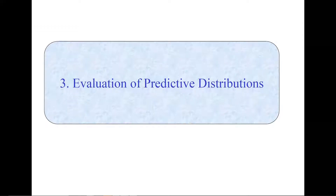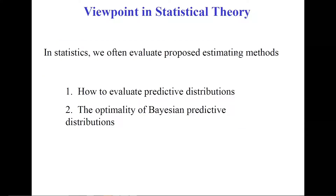Welcome to Section 3, Evaluation of Predictive Distributions. In statistics, we often evaluate proposed estimating methods. In this section, we consider how to evaluate predictive distributions. Suppose that we have two ways of constructing predictive distributions, p-hat and q-hat, and we want to determine which is better. Here we see the optimality of Bayesian predictive distributions, first shown by Aitchison 1975.